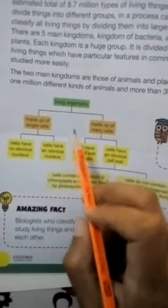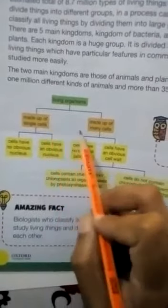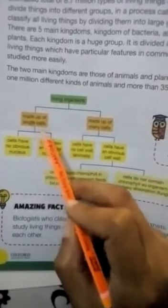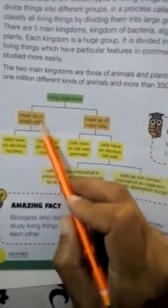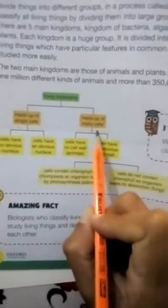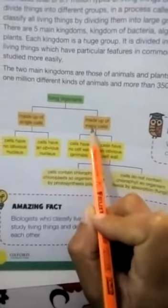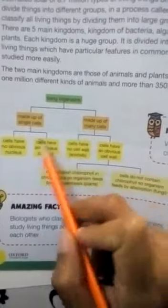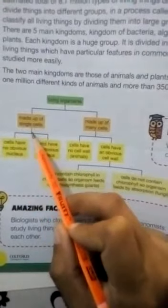Living things are also classified based on their cell structure. Those made up of a single cell are called unicellular organisms, and those made up of many cells are called multicellular organisms.